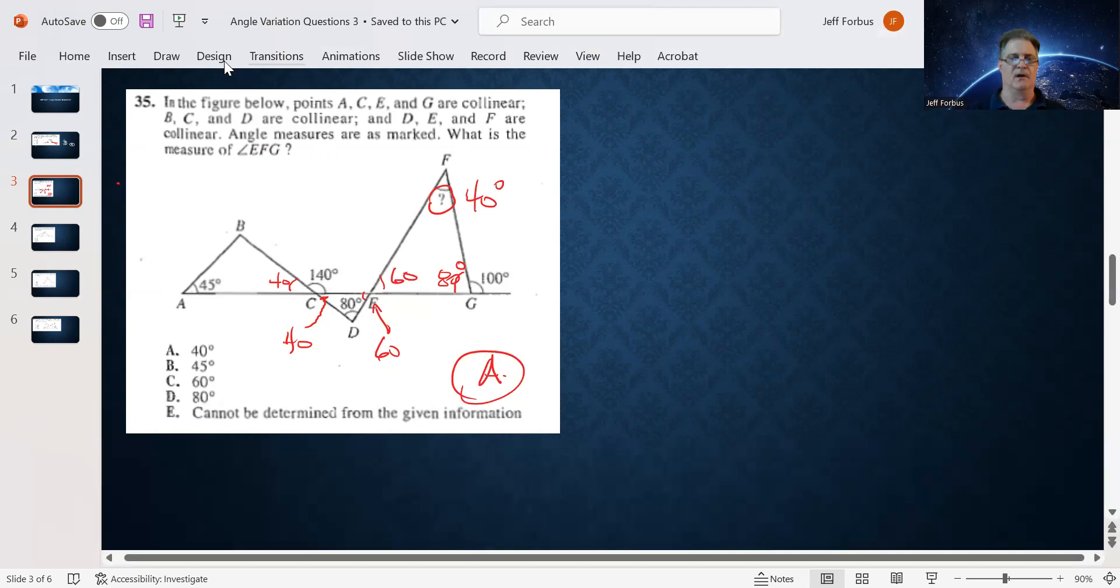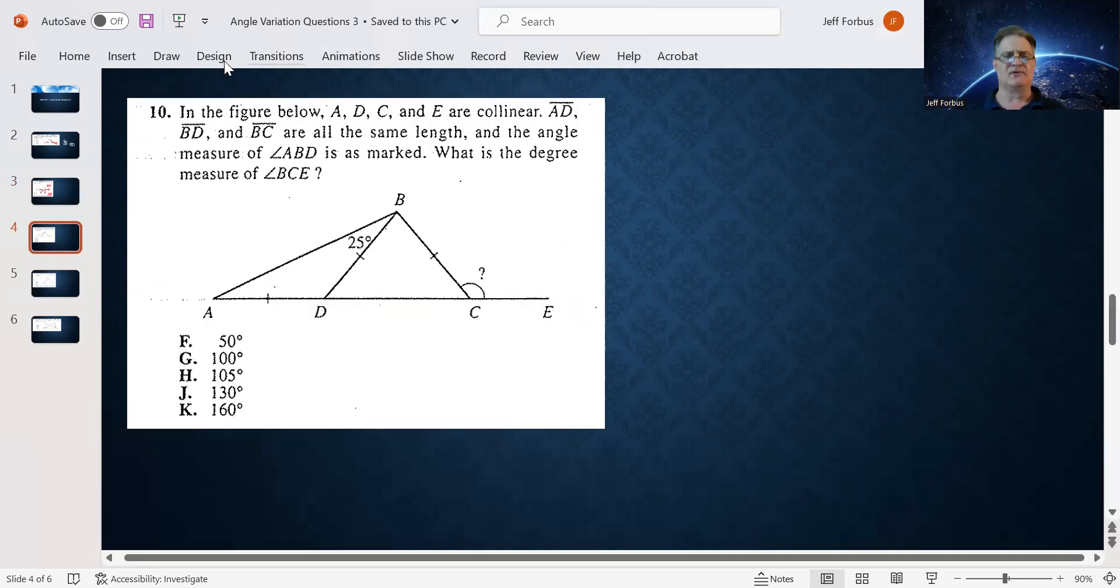Next question. The question actually says, what is the degree measure of angle BCE? So we want C right here. The neat thing is the hash marks on each of these lines indicate they're all the same length. So AD and BD are the same length. That implies angle A must be 25 degrees as well. Now we can take a total of that 50 degrees and subtract from 180 and we figure out that D is 130.